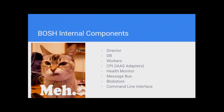What are the components of BOSH? First is the director — it's the brain. It will schedule processes, queue tasks and run them. We have a database to persist state. We have workers — they pick up the tasks; if you have seven things at once and four workers, it picks up four and queues the rest. We have CPIs, the adapters that talk to the IaaS. We have the health monitor, which monitors whether your service is running and whether your VM still exists. We have a message bus for communication between the agent on the VM and the director. We have a blob store for uploaded packages. And we have the CLI — that's how you interact with BOSH.